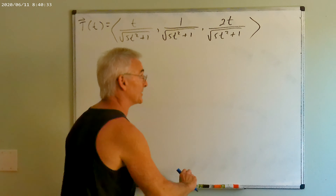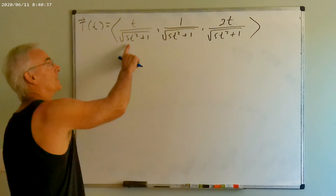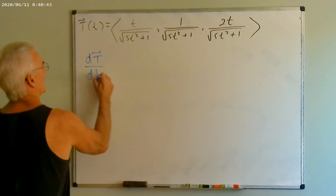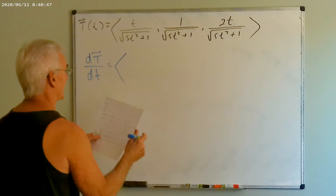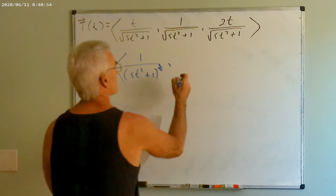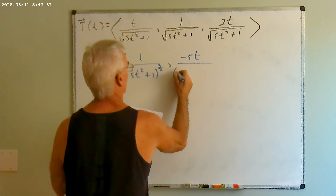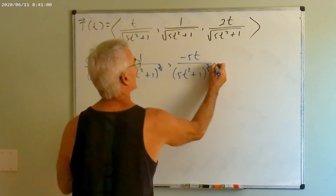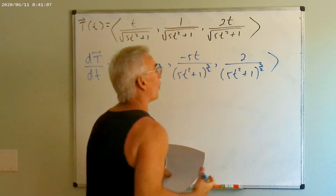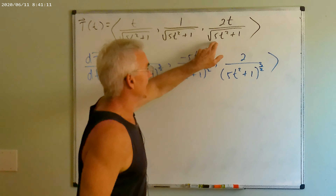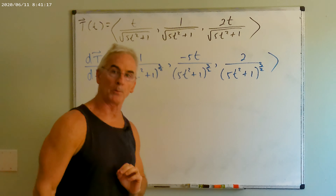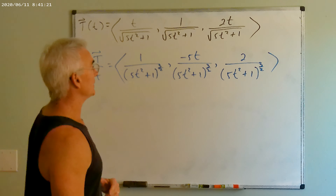Now let's try a more complicated example with a different curve. This one has very simple terms as component functions, but what we'll find is that no matter how simple the position vector is — if it's not sines and cosines — it can get quite complicated very quickly. Starting with the velocity vector: we get 2t, 2, 4t. The length is the square root of 4t² + 4 + 16t², giving twenty-t squared plus four. Factoring out the square root of four, this becomes two times the square root of five-t squared plus one.